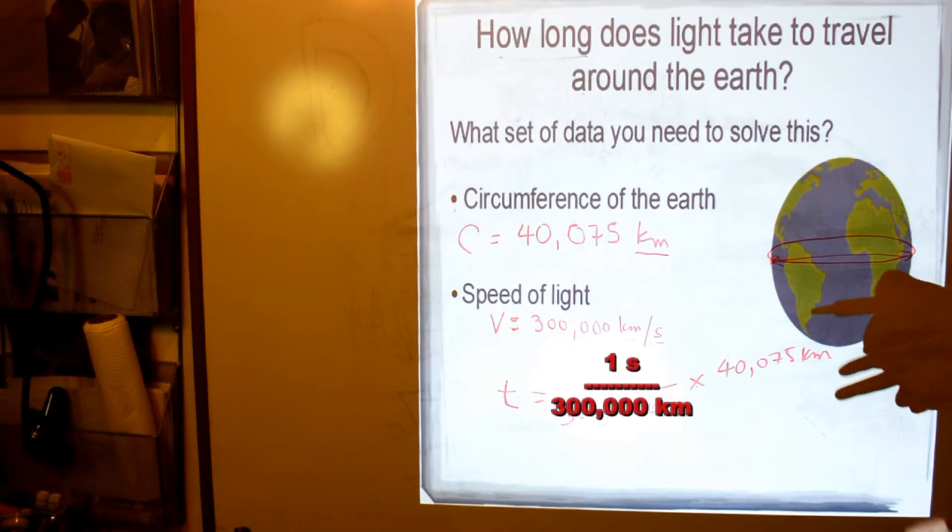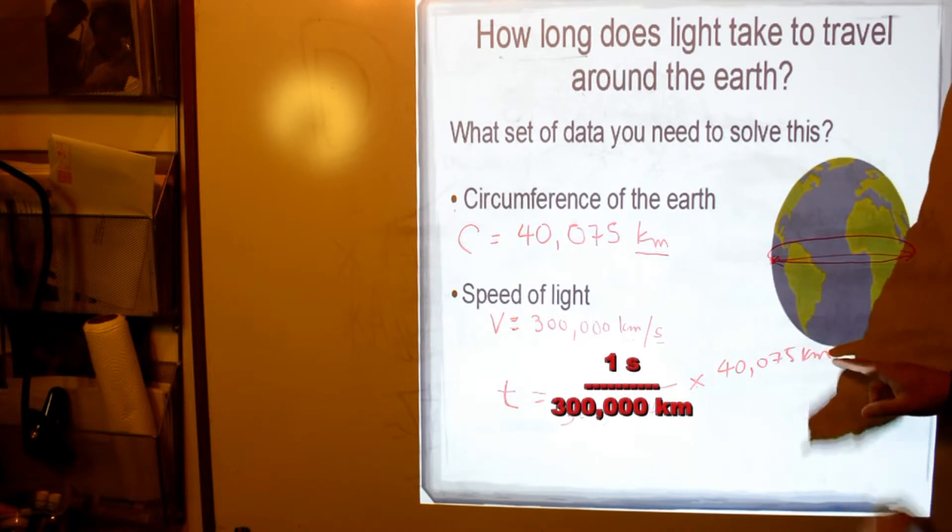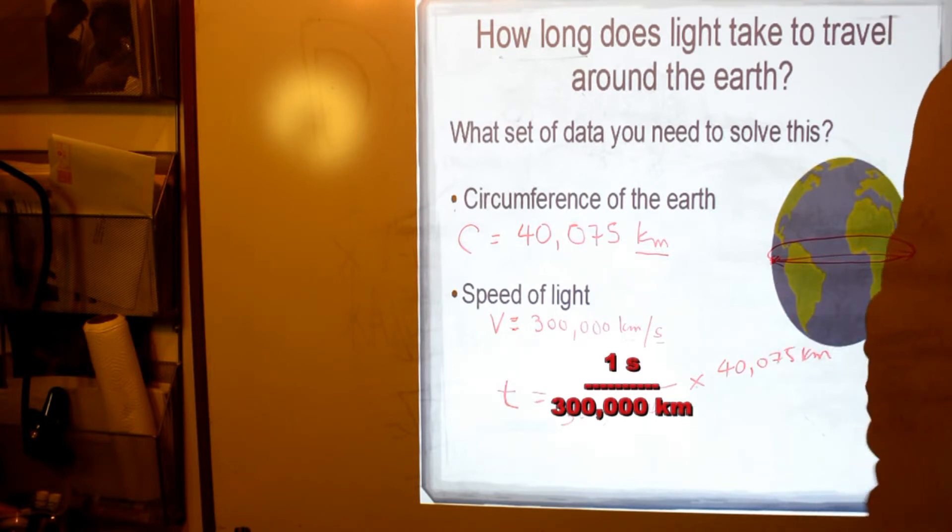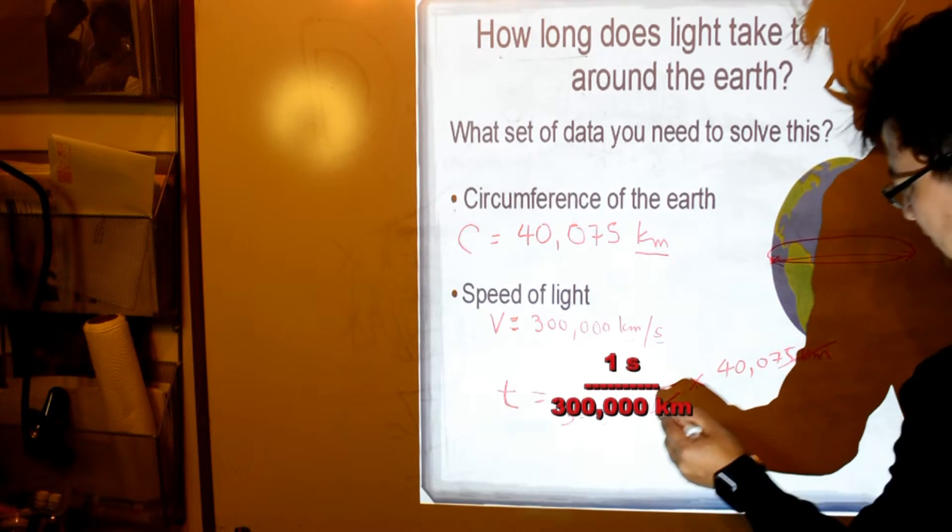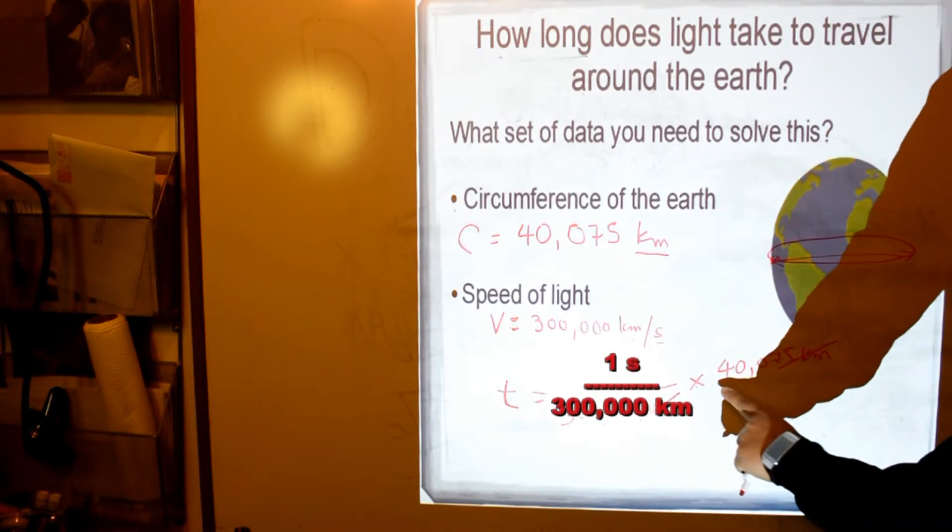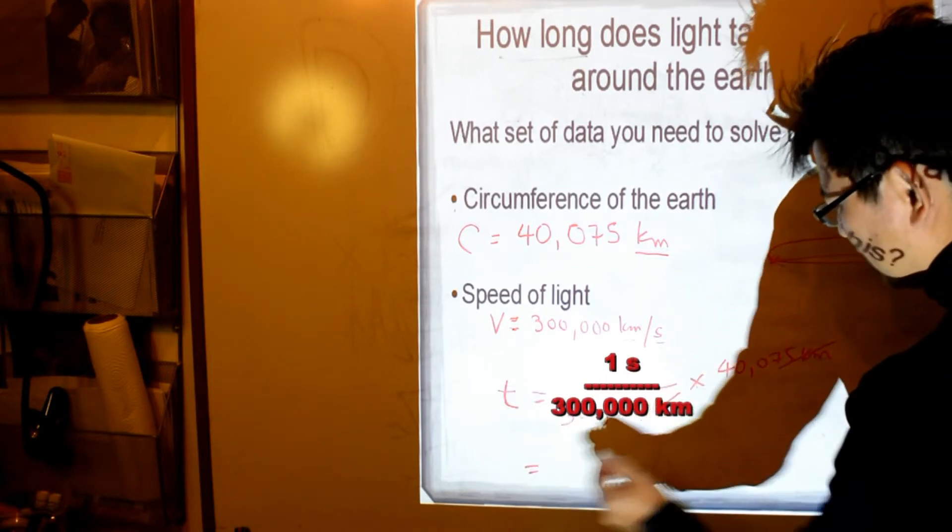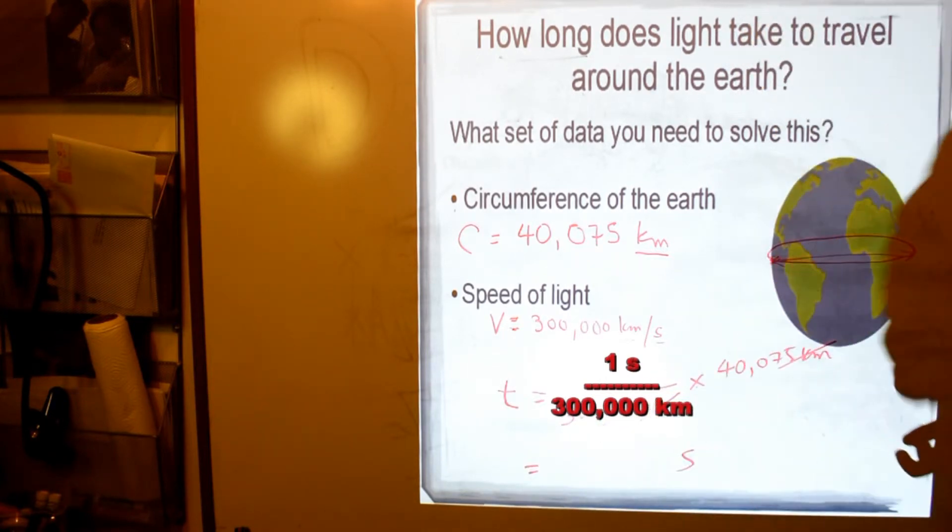Now, using the dimensional analysis method, we are looking at the unit. If the unit, kilometers, is over kilometers, it cancels itself out. And what we'll get is one second times 40,075 divided by 300,000. We will get the answer in seconds.